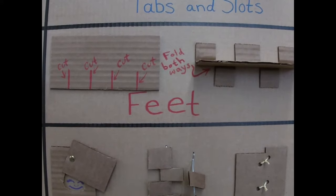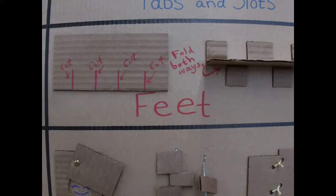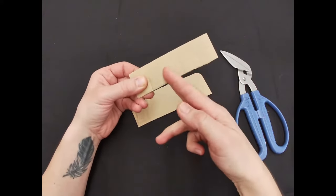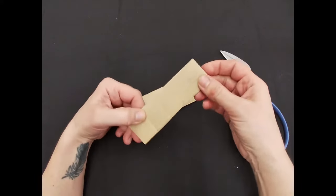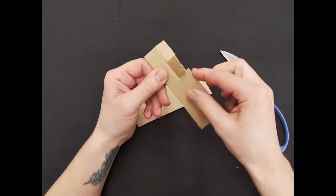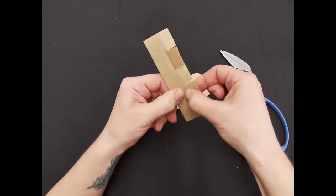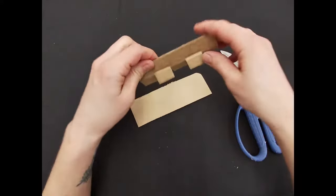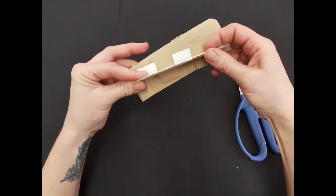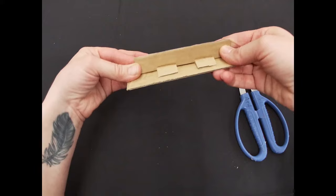Similar to creating a flange, we're going to create feet. It's very similar to flange. So I've sliced up in a few spots, but then instead of folding all in the same direction, you're going to alternate one direction and then the other to create a stable, straight wall. It gets glued down onto a surface like this.